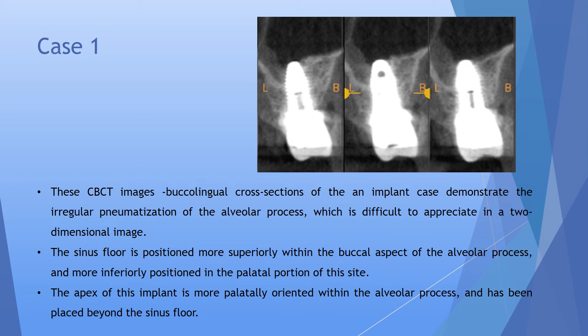Case 1: CBCT images showing buccolingual cross-sections of an implant case demonstrate irregular pneumatization of the alveolar process in the maxillary molar region — difficult to appreciate in two-dimensional imaging. The sinus floor is positioned more superiorly within the buccal aspect of the alveolar process (indicated by B) and more inferiorly in the palatal portion (indicated by L). The apex of this implant is more palatally oriented within the alveolar process and has been placed beyond the sinus floor.